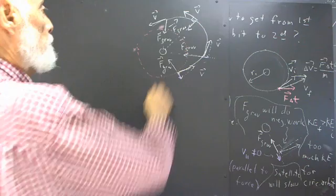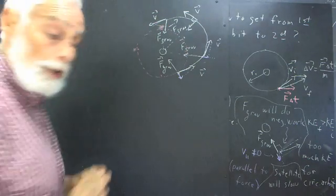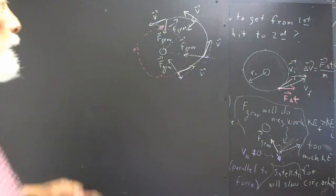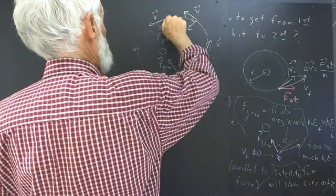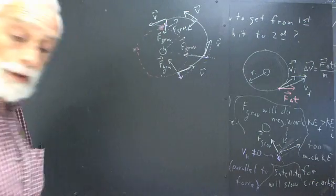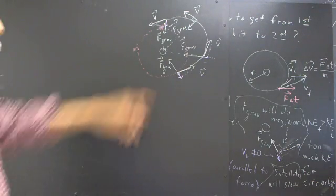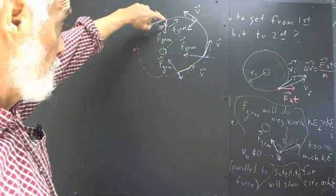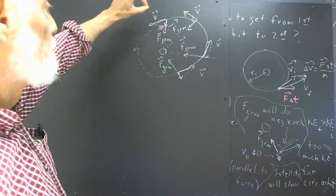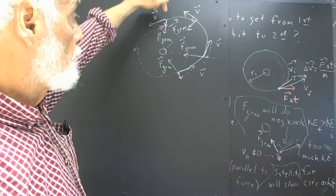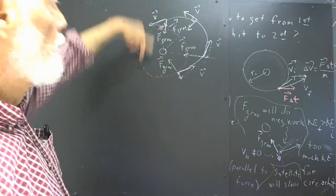So that the velocity component in the direction of the gravitational force is not opposed to, but in the direction of the gravitational force, meaning that the satellite is going to speed up, because gravitational force is now doing positive work on the satellite.